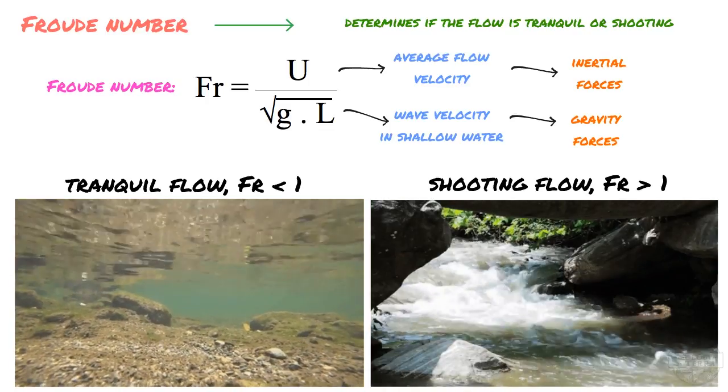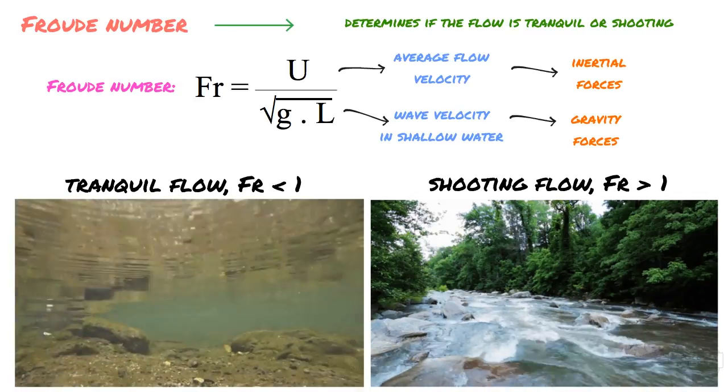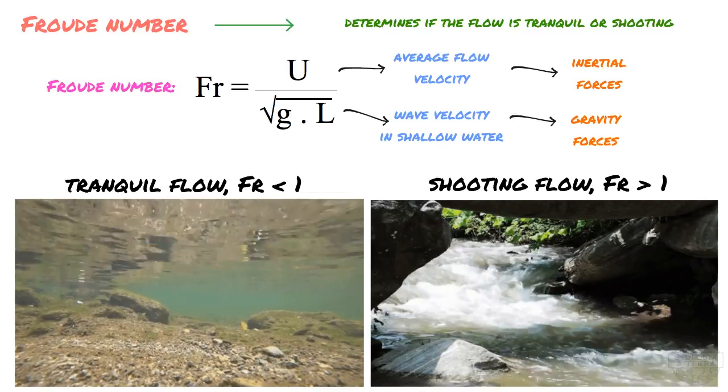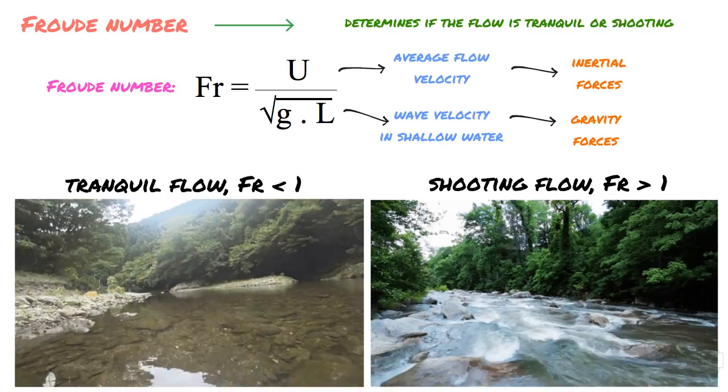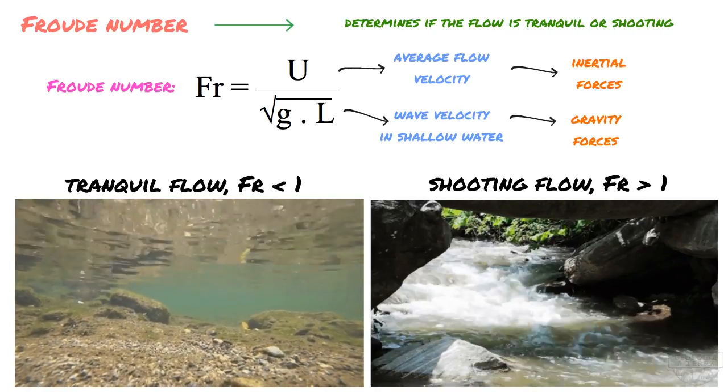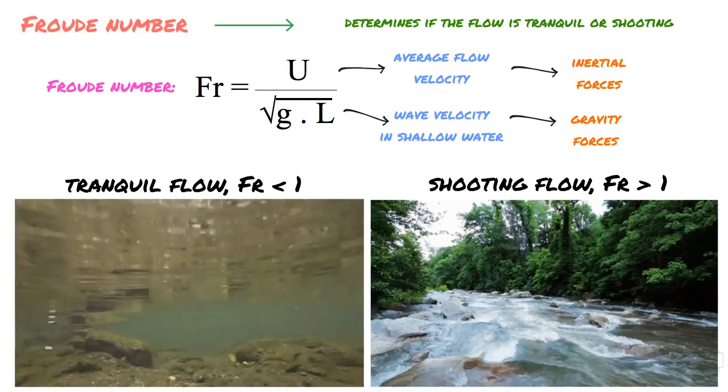In a tranquil flow, the speed of the waves will be greater than the velocity of the stream. The way to visualize this is to think of a very tranquil stream of water, like the one on the left. If you throw a little pebble into this tranquil stream, the waves created by the impact will probably be able to propagate against the current, upstream. In this case, this stream will have a flow number lower than 1.